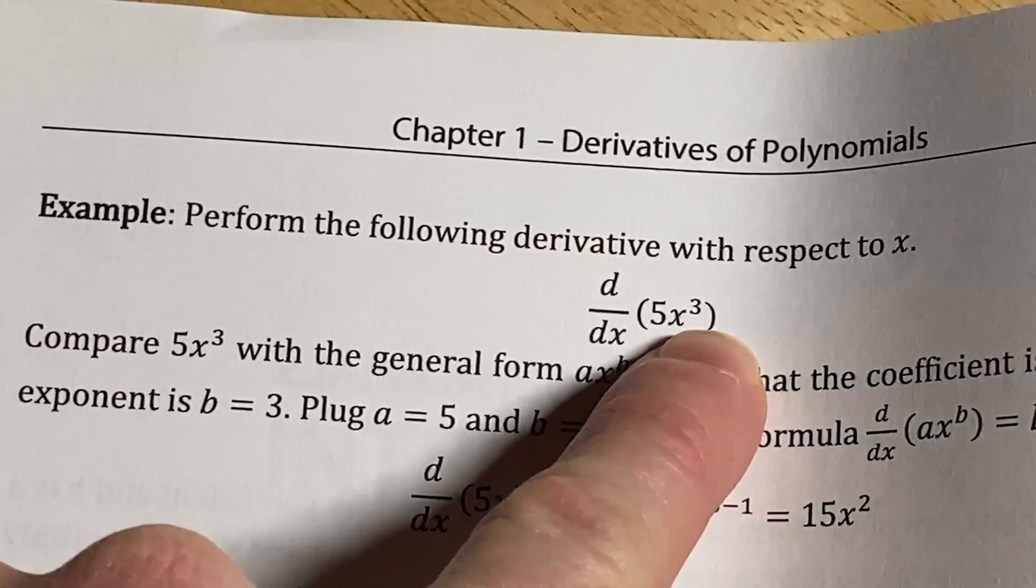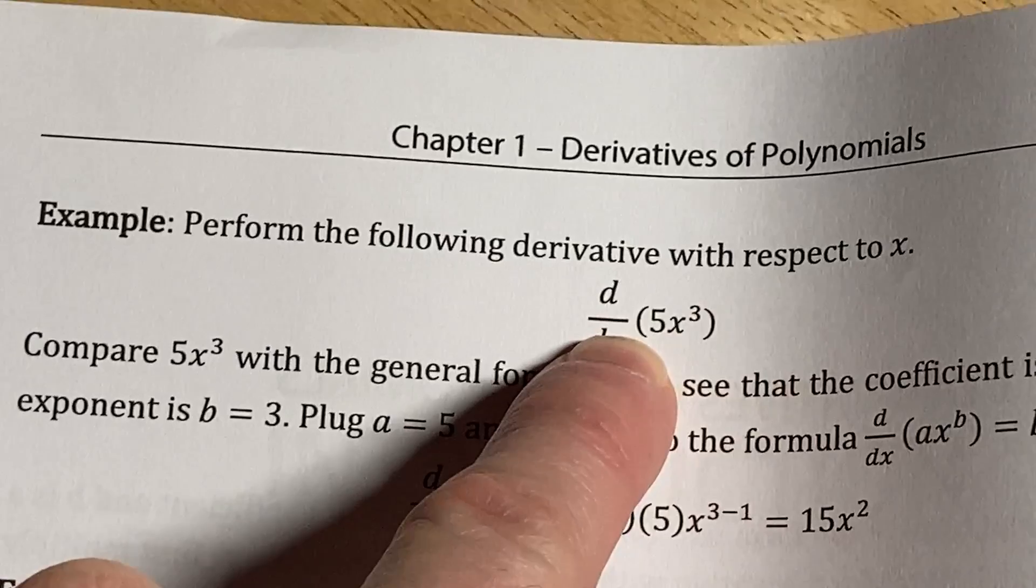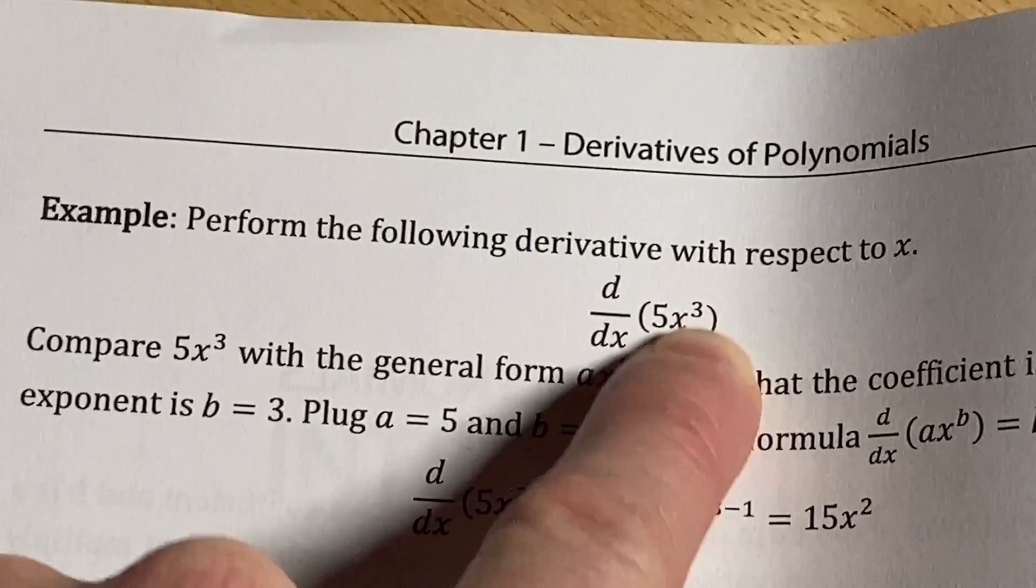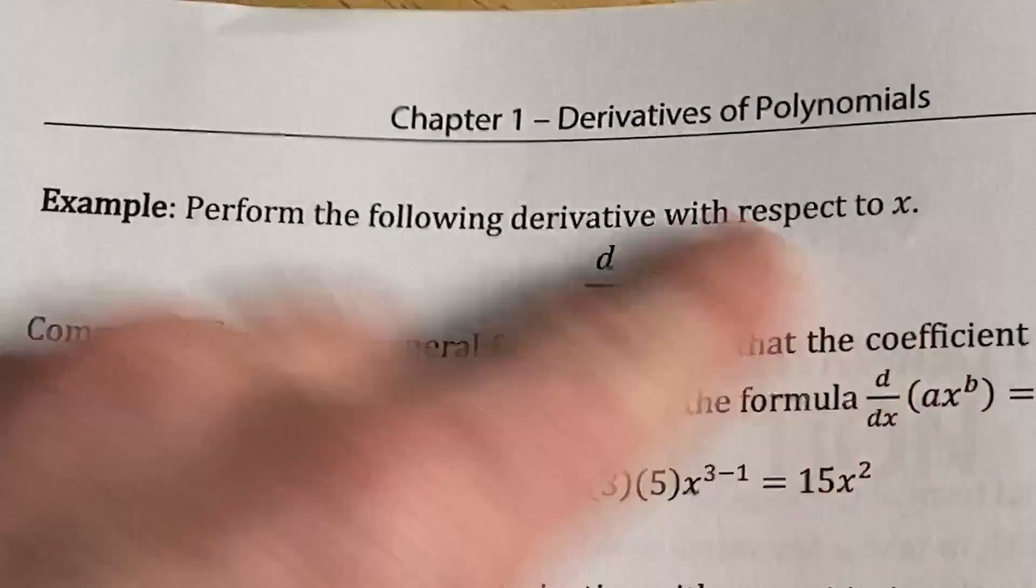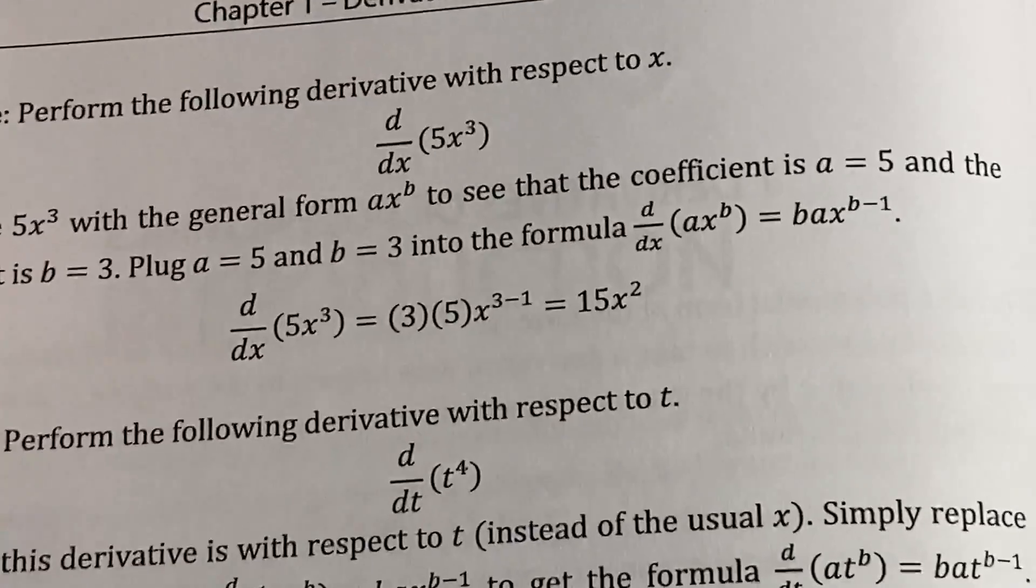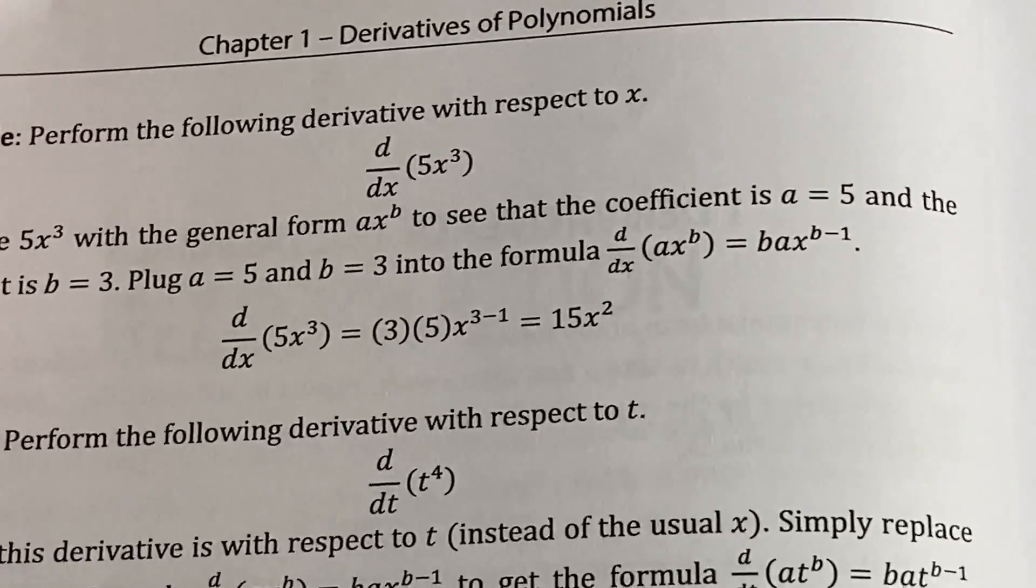So find the derivative, right? So basically you're using the power rule here. So you have this exponent. You bring the three down. So three times five is 15. Subtract one from the exponent. You get two. So it'd be 15x squared. All right.